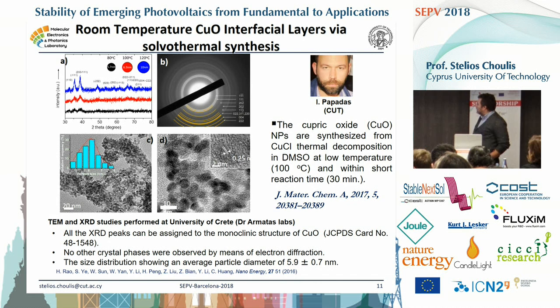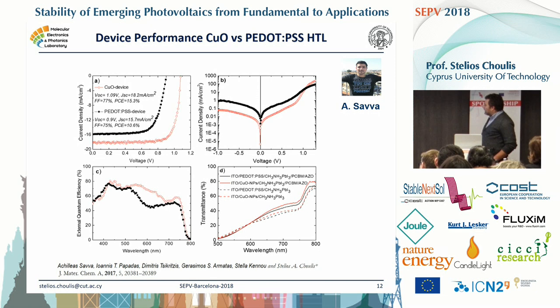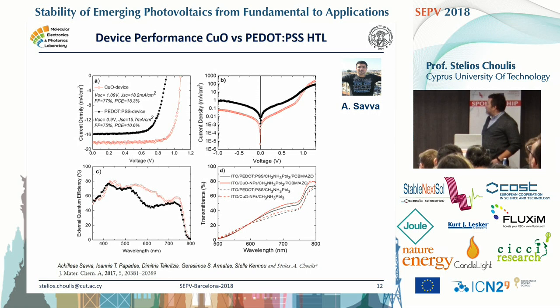He first tried to replace PEDOT:PSS with copper oxide. He developed a synthetic route which allows you to make copper oxide even with a tulipine process without any annealing. You have very nice distribution of particle sizes around 5 to 6 nanometers — these are TEM images — and you can see the crystal structure of copper oxide from Dr. Armata's lab. When we put this on the device, he can get much better performance compared to PEDOT:PSS: from 10% efficiency with PEDOT:PSS up to around 15% with copper oxide, with better leakage currents and some light management effects because of the nanoparticle nature of the copper oxide and aluminum hydrogen oxide used in these devices.